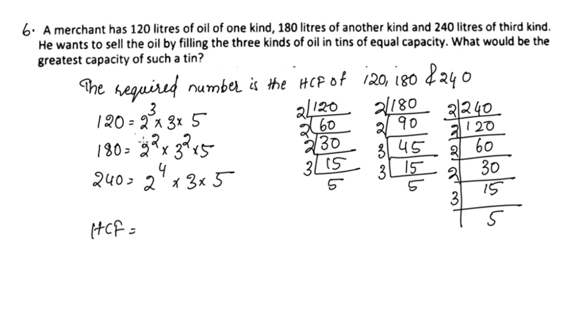Common factors are 2, 2, 3, and 5. The HCF equals 2² × 3 × 5, which equals 60 liters.